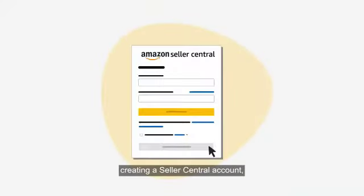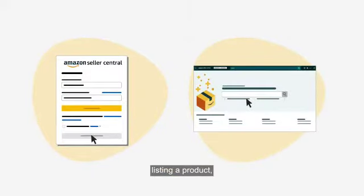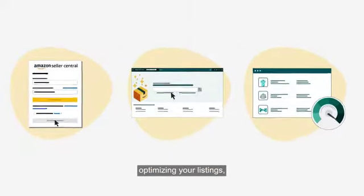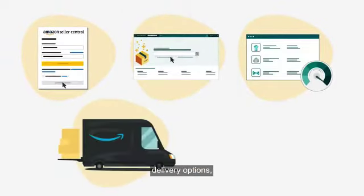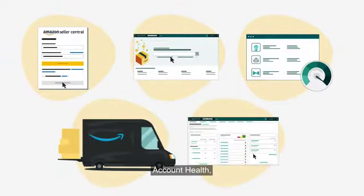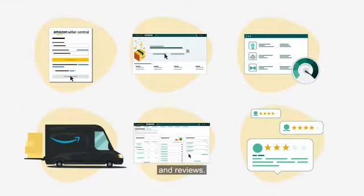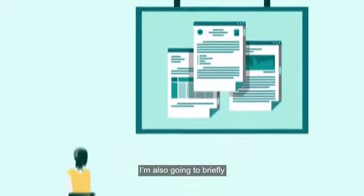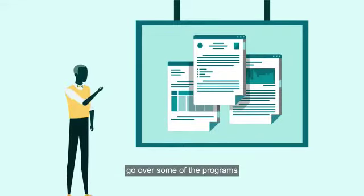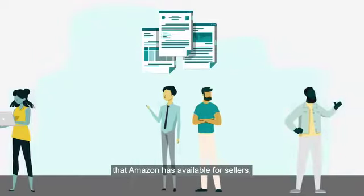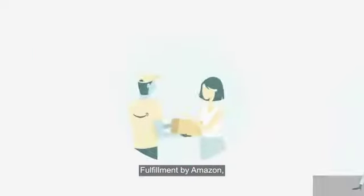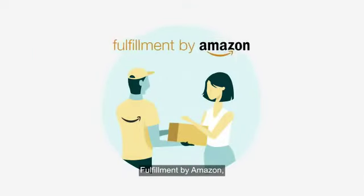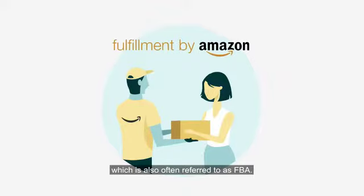We'll look at creating a Seller Central account, listing a product, optimizing your listings, delivery options, account health, and reviews. I'm also going to briefly go over some of the programs that Amazon has available for sellers, including Fulfillment by Amazon, which is also often referred to as FBA.